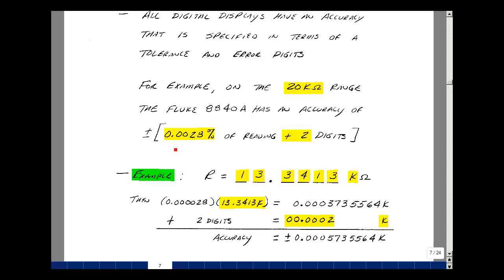we would then take 0.0028% of that reading, which is adding two more zeros, and this is the result that we get. And then we're going to add to that two digits or two counts. Just take the same places that are here. So here's the first place, second place, third, fourth, fifth, and sixth. And in that sixth place, put a two.